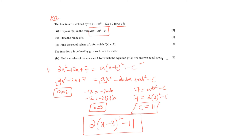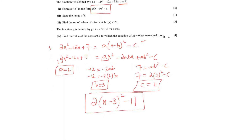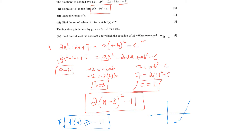In the next part they ask for the range of the function. The range is f(x) greater than or equal to minus 11. If you sketch the quadratic, the turning point is at (3, minus 11), so the minimum value of the function is minus 11.